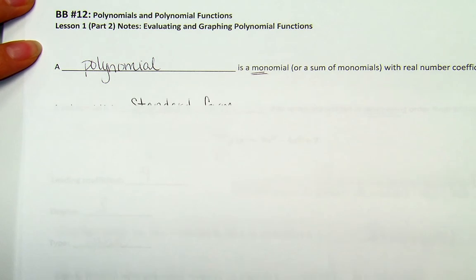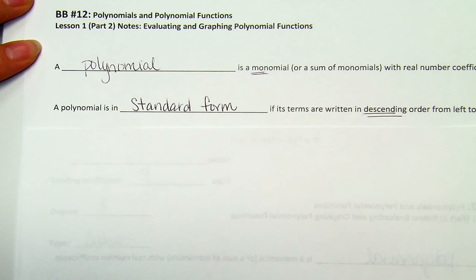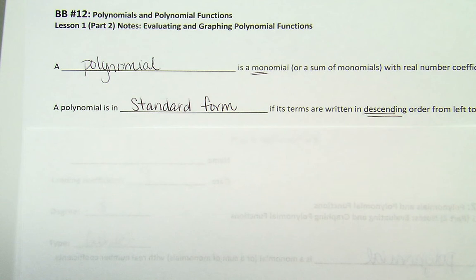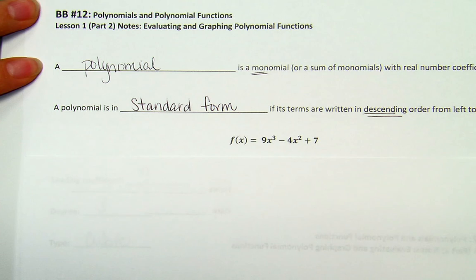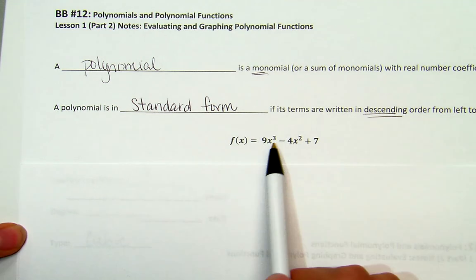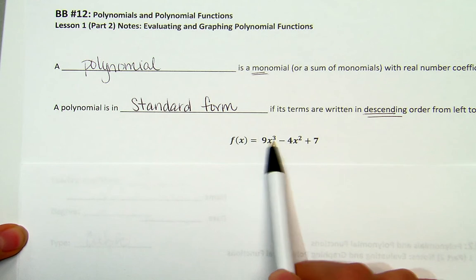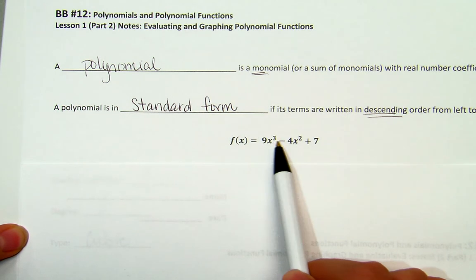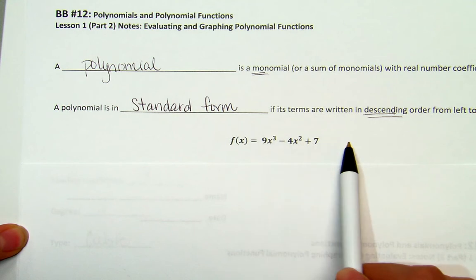We also talked about standard form. A polynomial is in standard form if its terms are written in descending order from left to right. Remember, descending is from highest to least. So that exponent should be in descending order. I gave you guys an example. In these notes, f(x) = 9x³ - 4x² + 7. This is in standard form, since we're starting off with degree 3, or our highest exponent being a cube, and going down in descending order.